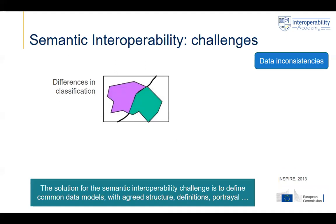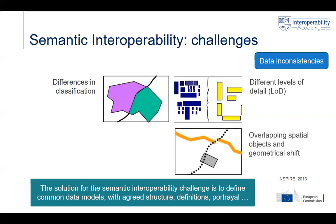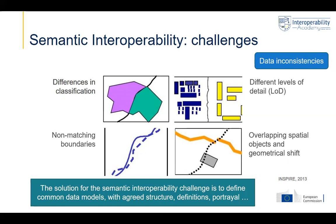Semantic interoperability comes with many challenges. For example, in a cross-border context, you might have the same type of data but different classifications, which must be harmonized. You might have different levels of detail for representing buildings or other location objects. You might have interconnections that do not fit well — like the example at the very beginning of this module with streets that are not matching — causing problems in transport and mobility applications. There are also different definitions at the borders of countries or regions. These are all semantic interoperability challenges requiring common models with agreed grid definitions within a country and across borders.